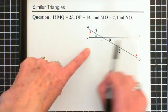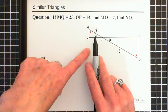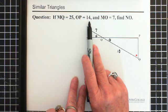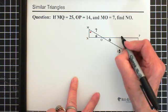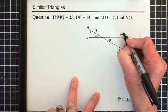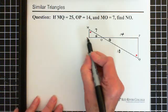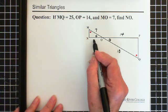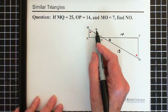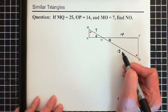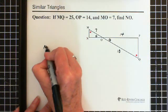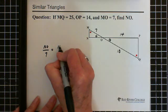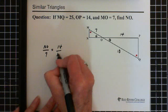We're also told that OP is 14. So from here to here the distance is 14. So we're looking for NO and I'm going to put that on the top of my equation. So I'm going to say NO with respect to 7 equals 14 with respect to 18. NO with respect to 7 equals 14 with respect to 18.